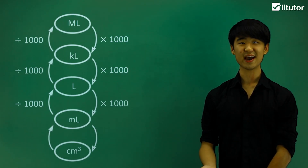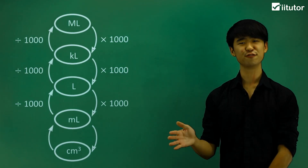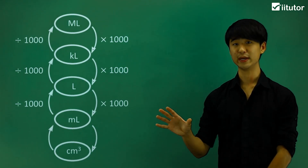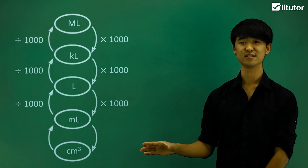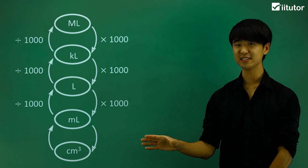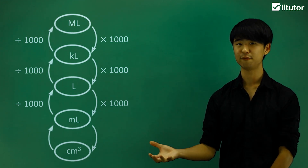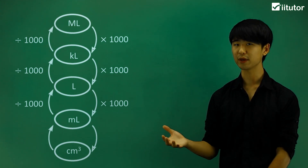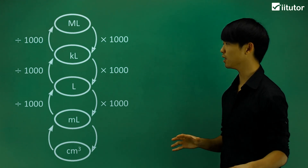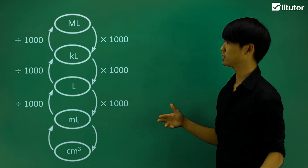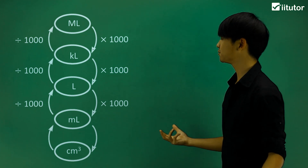We're going to be looking at different conversions between capacities. Capacities is another form of volume — they're very similar, but they represent different things.